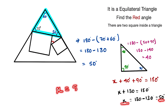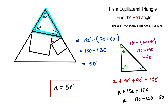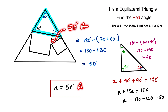So x equals 50 degrees. The red angle is equal to 50 degrees — that is our final answer. Thank you so much for watching. If you liked the video, please subscribe to our channel and share it with your friends.